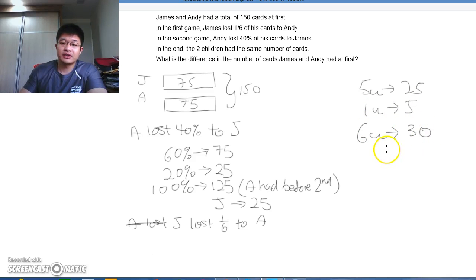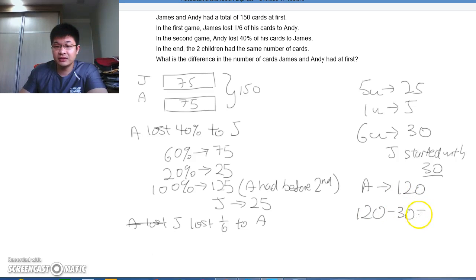So this is what James started with. So if James started with 30, that would mean Andy started with 120. Right, 150 minus 30 is 120, so what's the difference in the number of cards? 120 minus 30, you get 90.